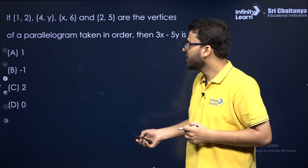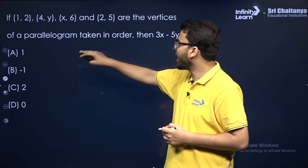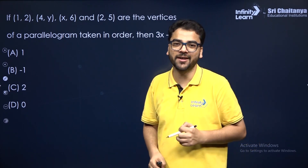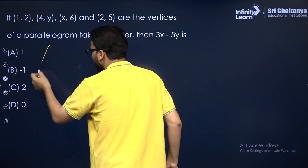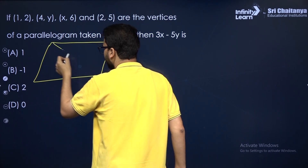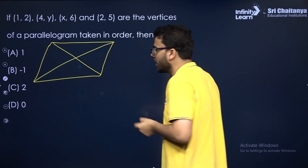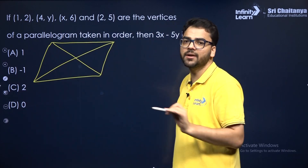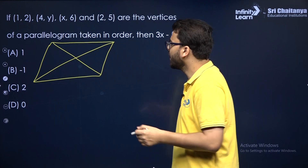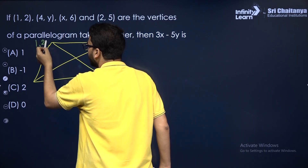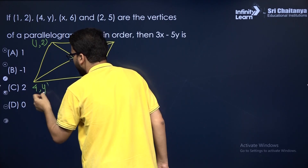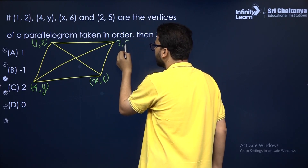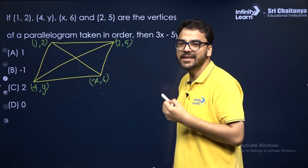Let us take the next question. These are the vertices of a parallelogram taken in order. Can you find the value of 3x minus 5y? Just make a rough figure and join the diagonals, because without joining the diagonals you won't be able to do this question. The vertices are taken in order: (1, 2), (4y), (x, 6), and (2, 5).